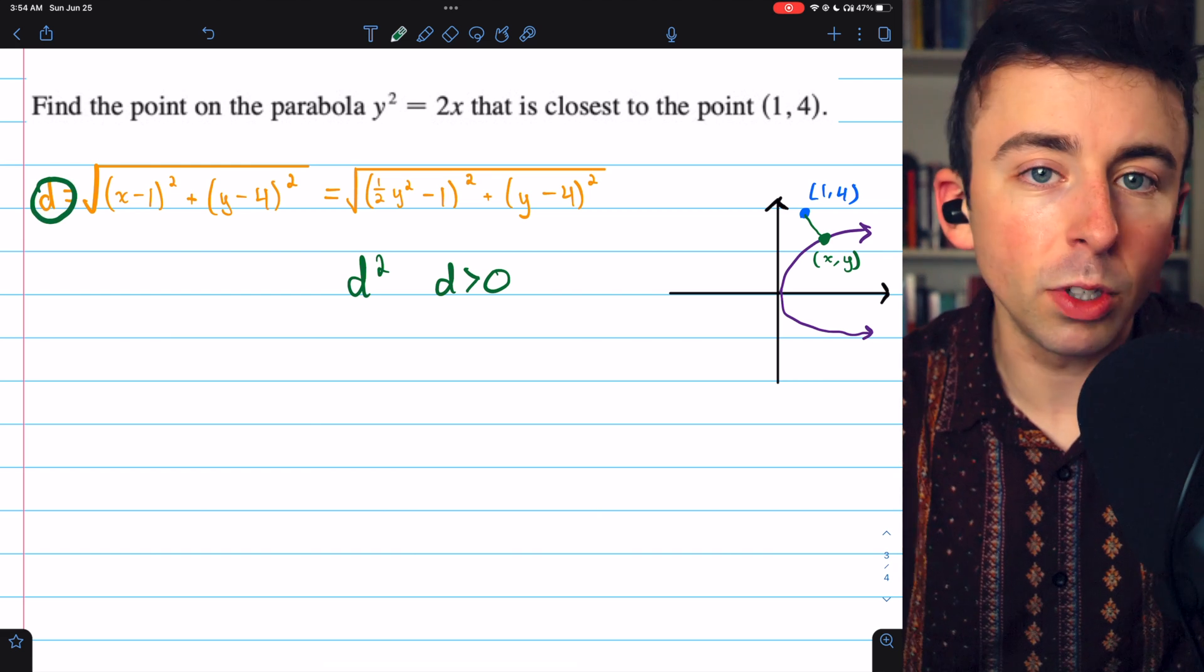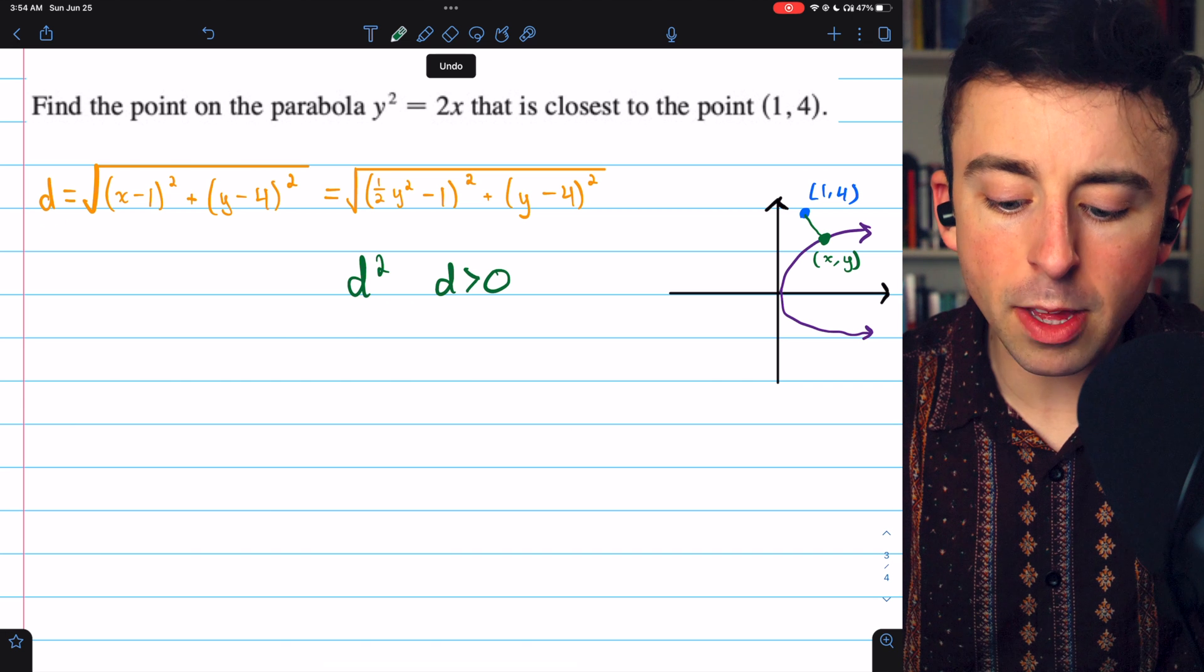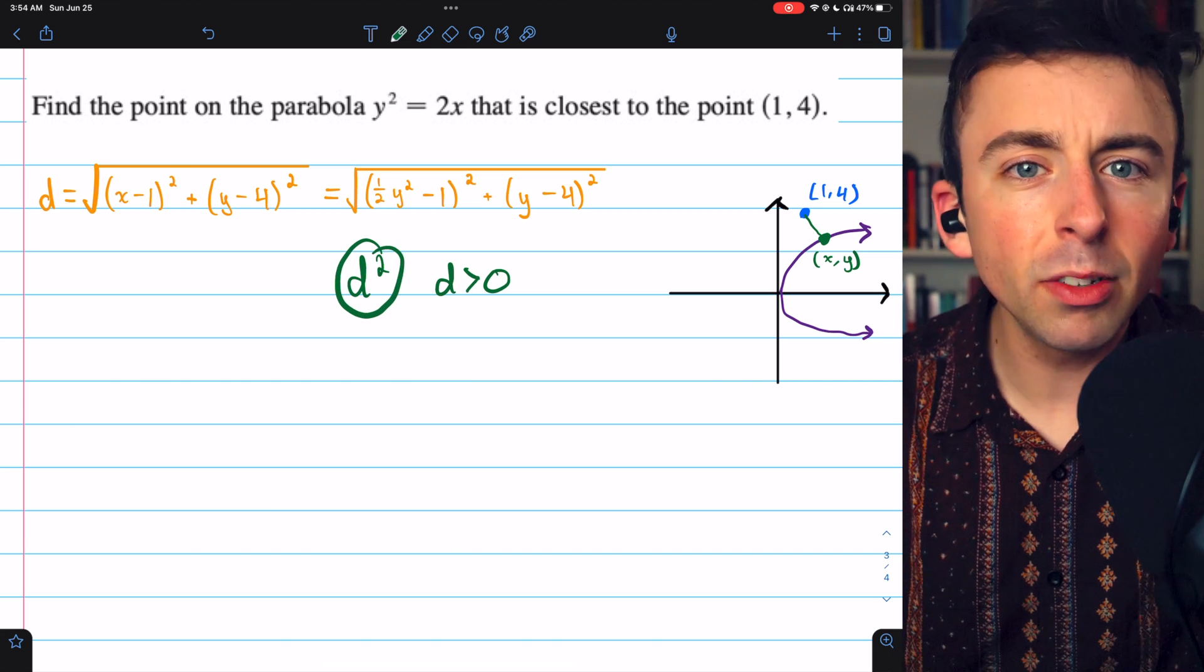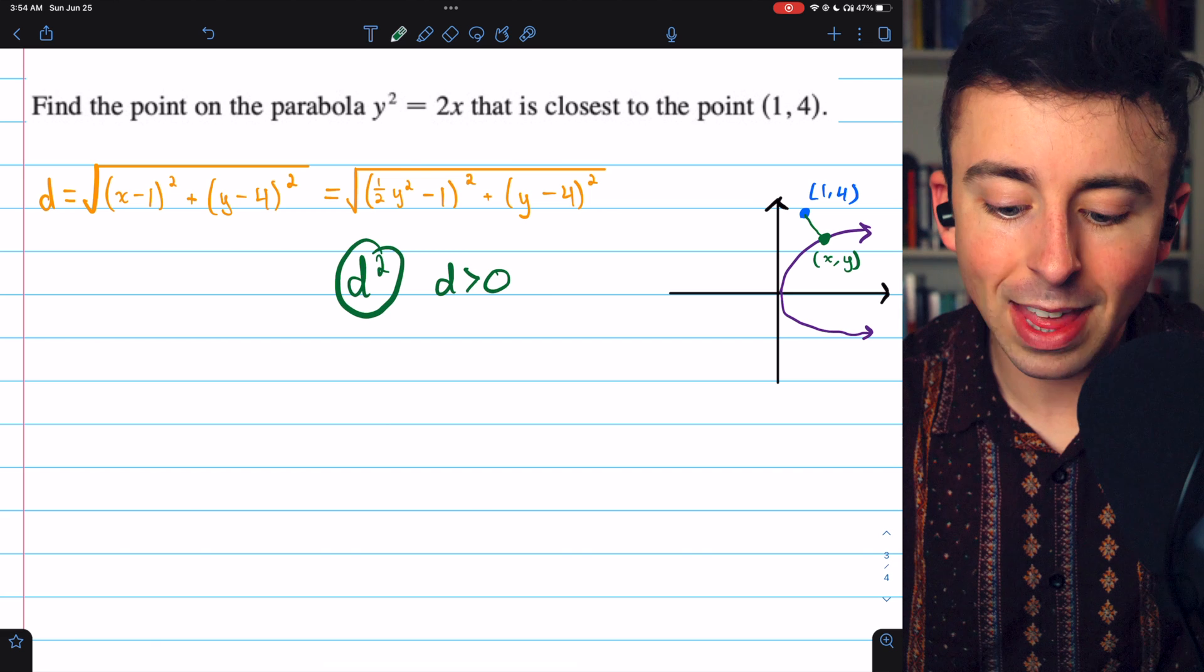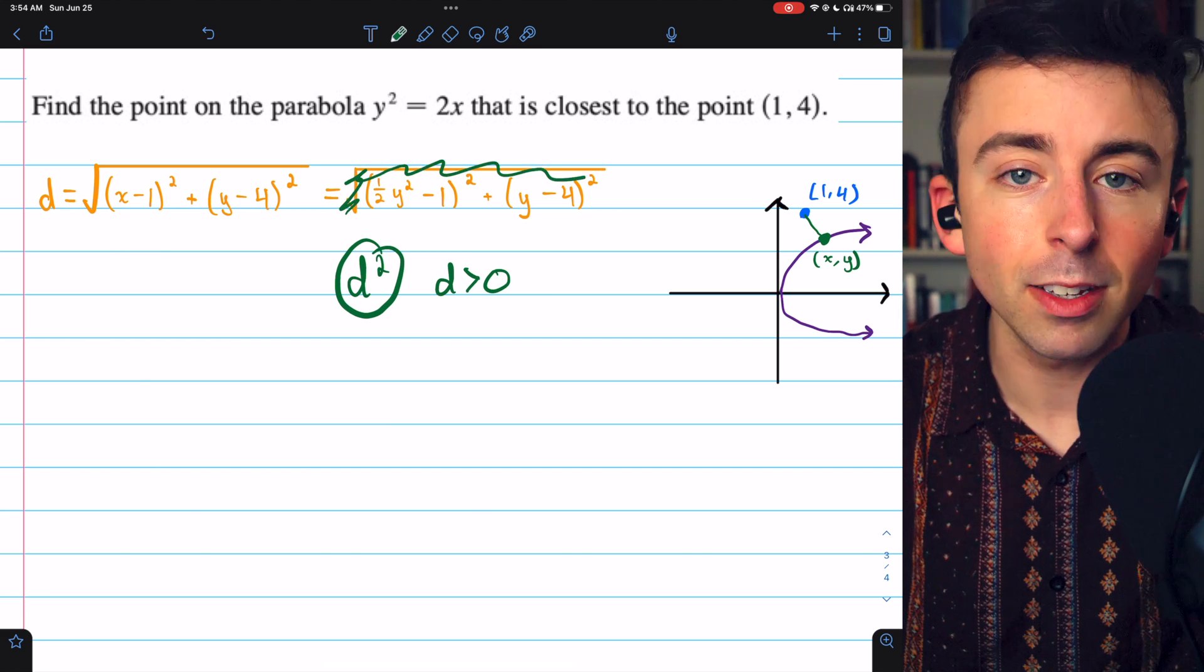So the minimum of d, which is what we're looking for, will also be the minimum of d squared. So it would actually be easier if we just worked with d squared. That way we don't have to deal with the messy square root.